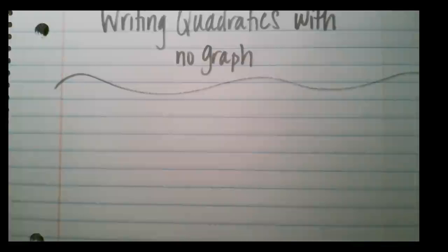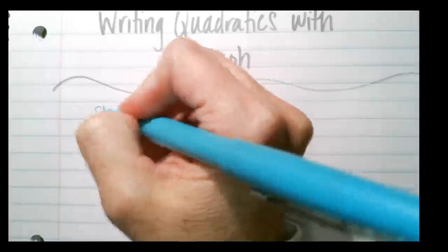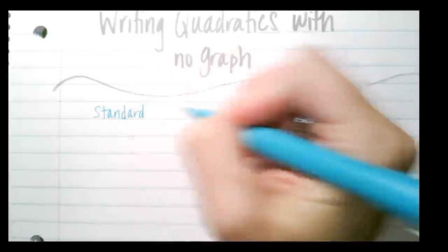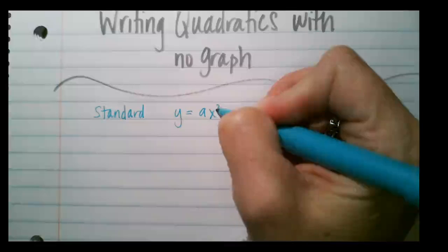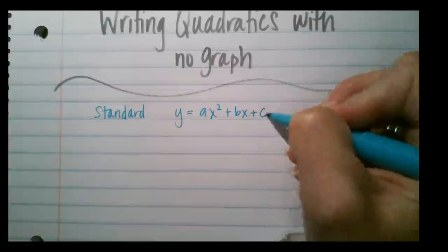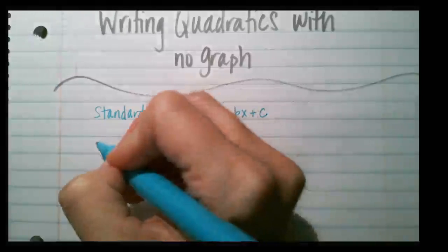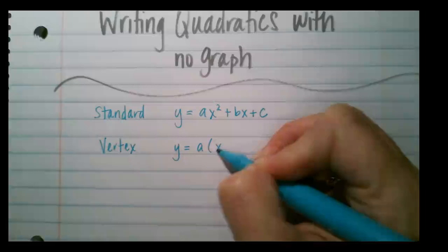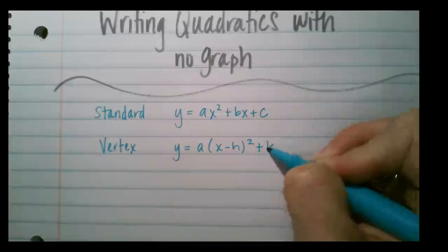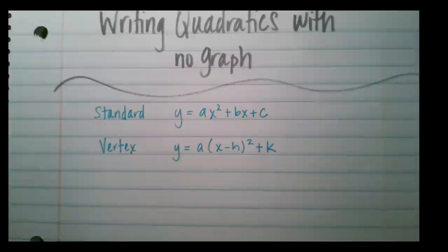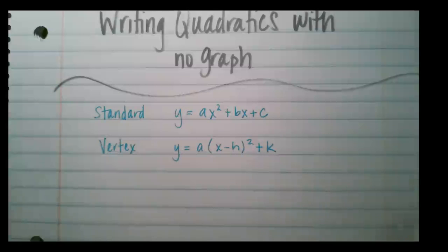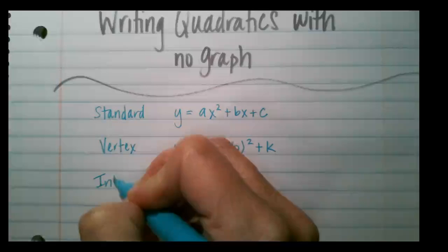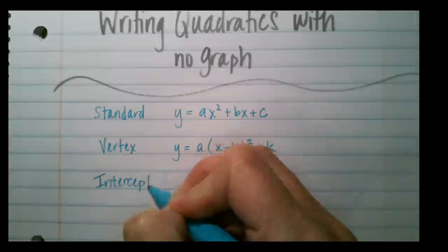Before we start, I just want to do a quick review of the three forms of a quadratic. First off we have standard form, which is y equals ax² plus bx plus c. Then we have vertex form, which is probably my personal favorite, and that looks like a times (x minus h)² plus k, where (h, k) is the vertex.